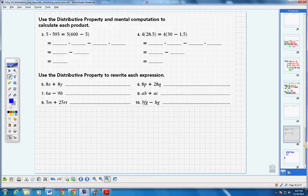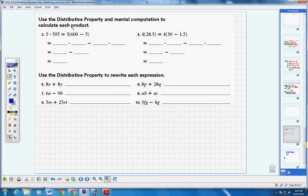So if I'm using the distributive property and mental computation to calculate each product, 5 times 595 for example. Well, I know that 595 is really close to 600, in fact it's just 5 less. So in this case we're going to take 5 and we're going to multiply it times (600-5). Again, the quantity (600-5) is the exact same value as 595, so I'm going to go ahead and just draw it out here.